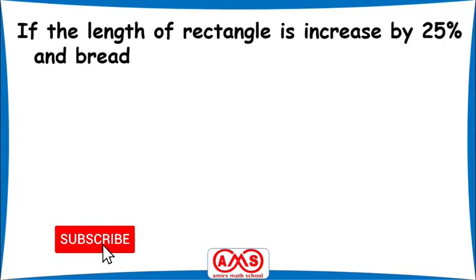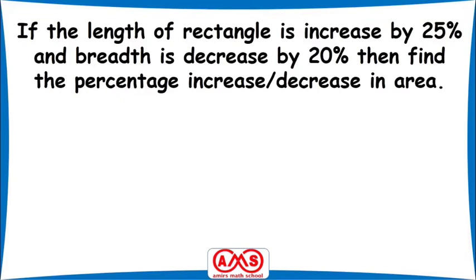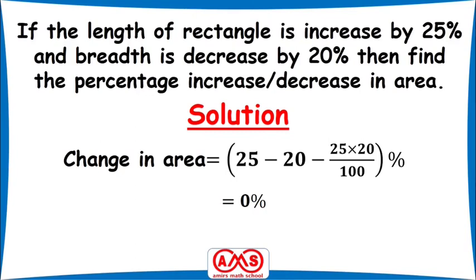Now another type of problem: if the length of a rectangle is increased by 25% and the breadth is decreased by 20%, find the percentage of increase or decrease in area. The solution is: change in area equals 25 minus 20 minus (25 times 20) divided by 100 percent. Here 25 is the percentage of increase in length and 20 is the percentage of decrease in breadth. After calculation we get 0%, meaning there is no change in area.